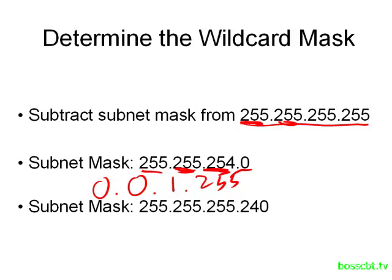Let's do another example. Here the subnet mask is a slash 28, with 240 in the last octet. The first three octets are all 255s, so the first three octets of the wildcard mask are going to be 0.0.0. The last octet turns out to be 15, so our wildcard mask is 0.0.0.15.